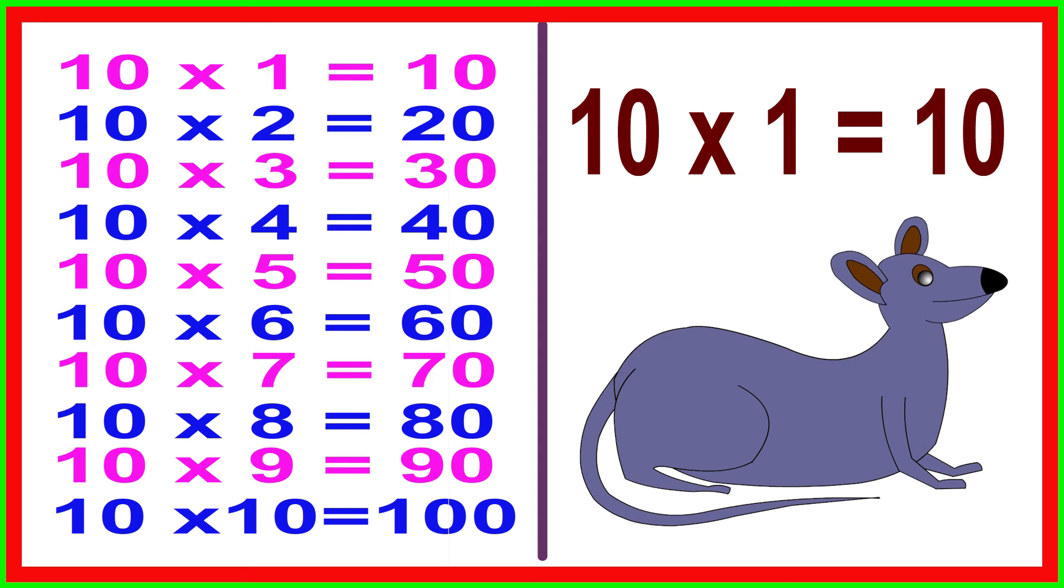10 times 1 equals 10, 10 times 2 equals 20, 10 times 3 equals 30, 10 times 4 equals 40, 10 times 5 equals 50.